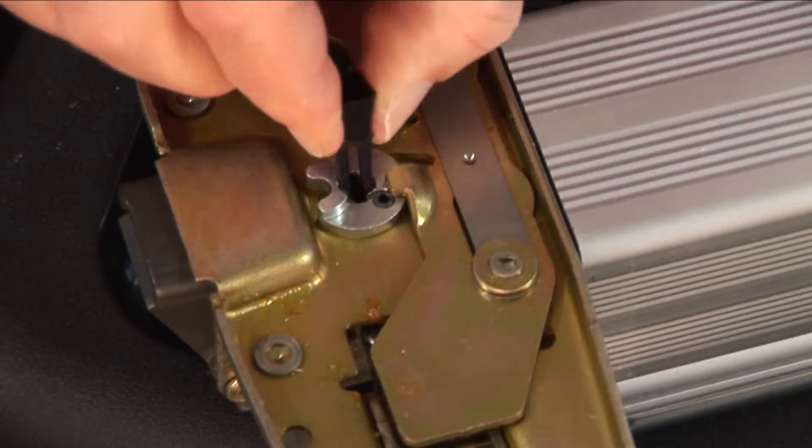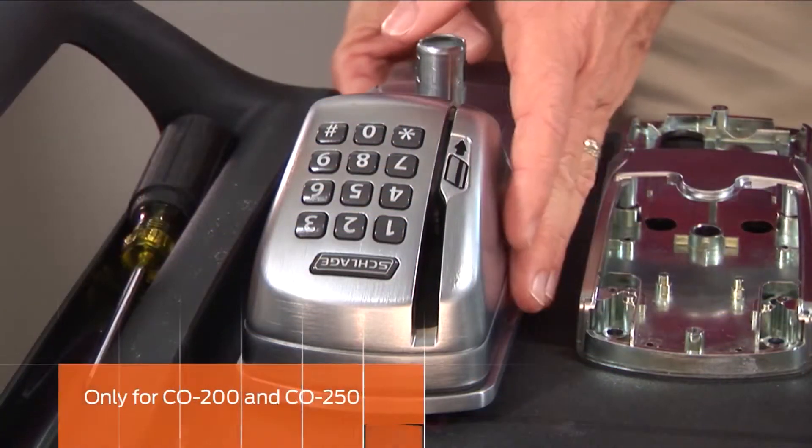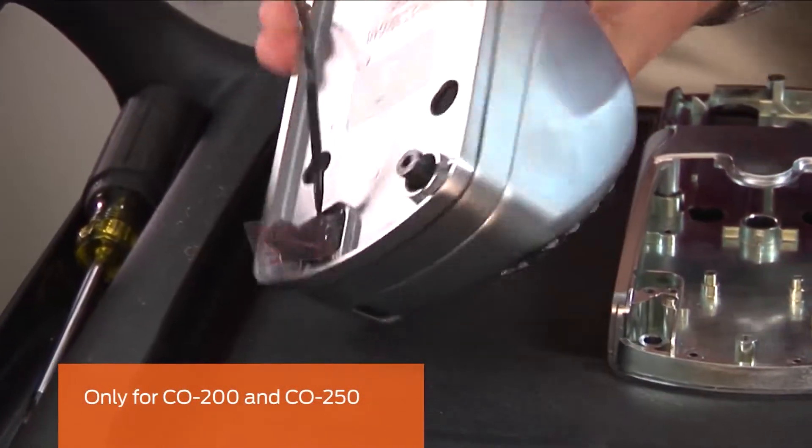Insert the tailpiece guide into the exit device center case assembly. This step is only for the CO 200 and CO 250.